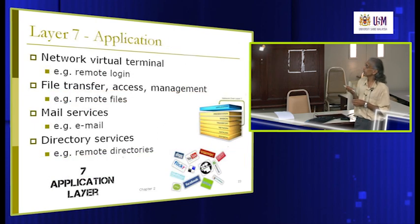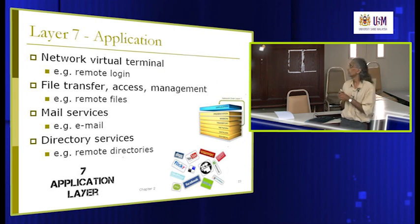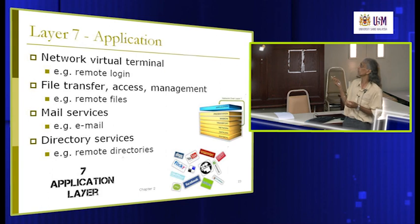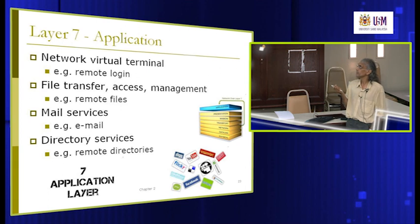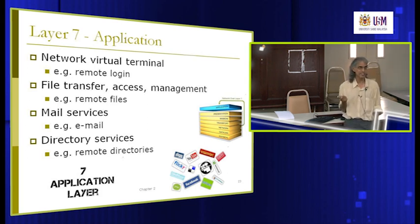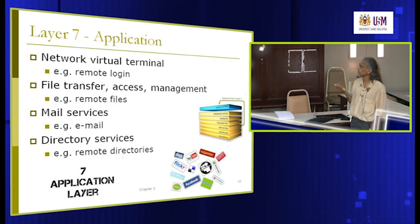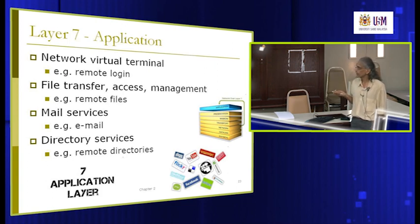Finally, the application layer is the highest layer. It provides functions and facilities for the user — the user interacts with the application layer only. The user looks at the interface, clicks buttons, and those are application layer functions. Examples include a network virtual terminal, remote login, file transfer, mail services, and directory services — all come under the application layer.